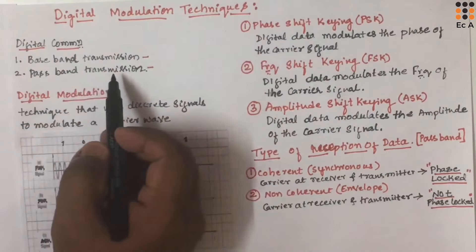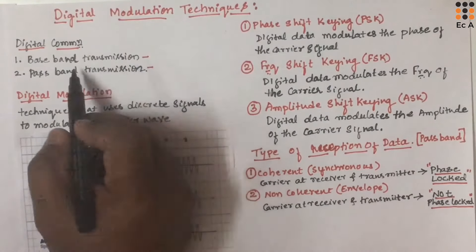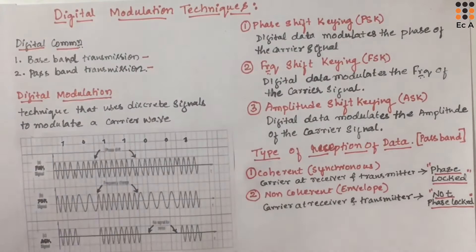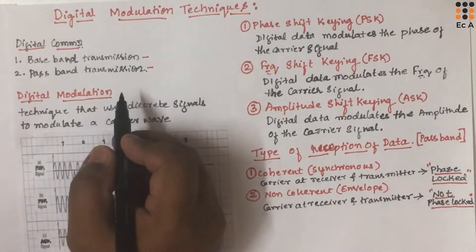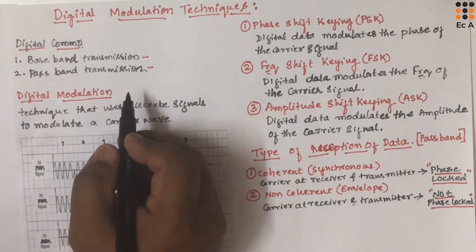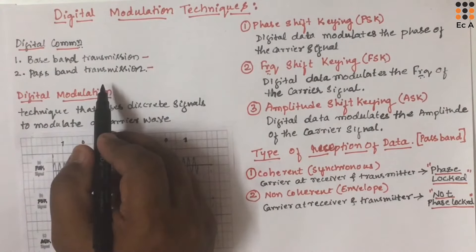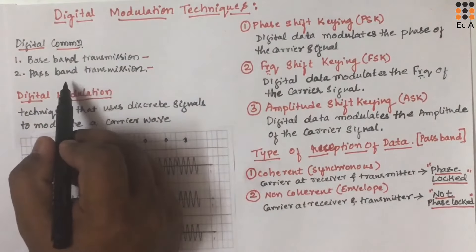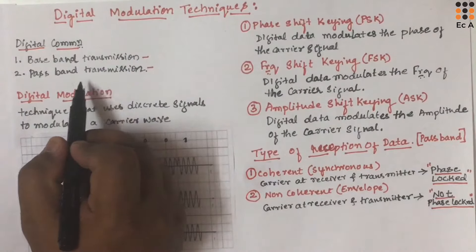This type of transmission is suitable for shorter distance, so baseband is not applicable for longer distance communication. In passband transmission, the high frequency sinusoidal carrier signal is modulated using the digital data, hence a high frequency sinusoidal carrier signal is digitally modulated. This type of transmission is suitable for transmission over a longer distance.